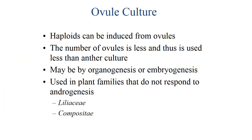Coming to ovule culture. Haploids can be induced from ovules, but the number of ovules is less and thus it is used less than anther culture, because the number of haploid plants obtained from anther culture are more. Per plant, the number of anthers is more compared to the number of ovules. It may involve organogenesis or embryogenesis, used in plant families that do not respond to androgenesis like Liliaceae and Compositae.